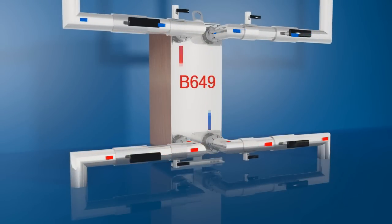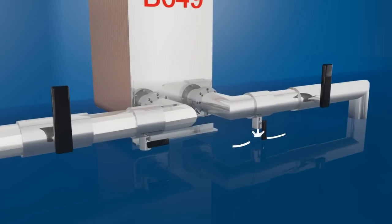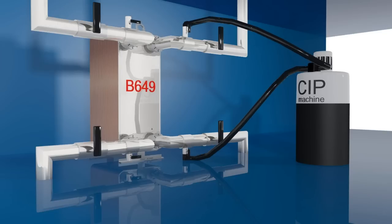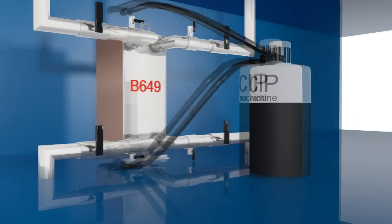A BPHE is normally self-cleaning thanks to high turbulent flows. In applications with a risk of fouling or scaling, cleaning may be required to maintain efficiency. This is achieved quickly and easily using cleaning in place. This is a way of cleaning the interior surfaces of closed systems by circulating a fluid. Disassembly is not required.